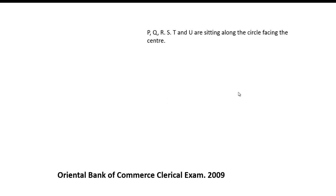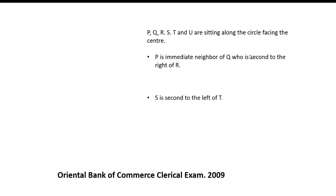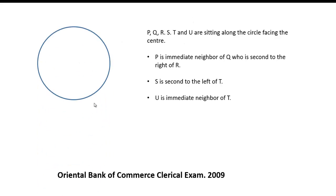Here is the question: P, Q, R, S, T and U are sitting along the circle facing the center, and three conditions are given. To place the positions of these six persons, first we draw a circle. Since there are six persons, we draw six arrows which are facing the center.